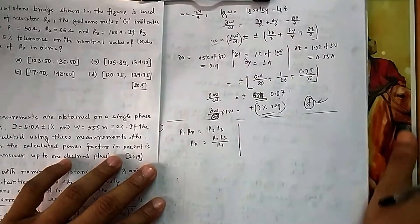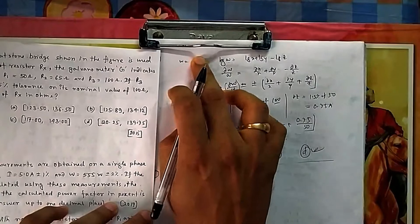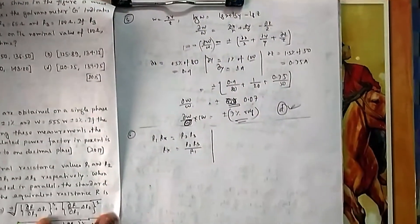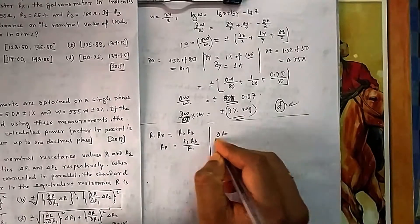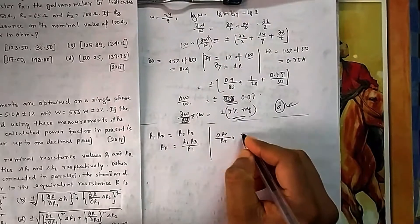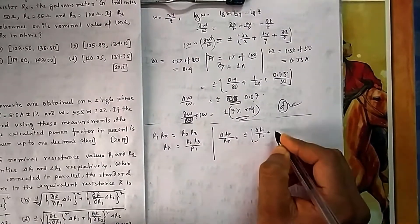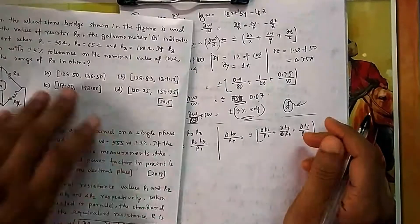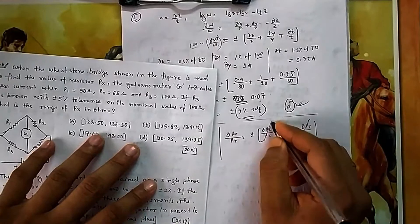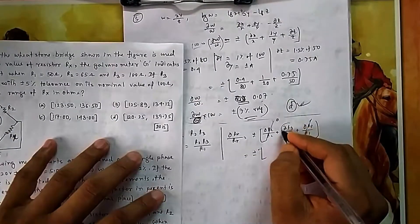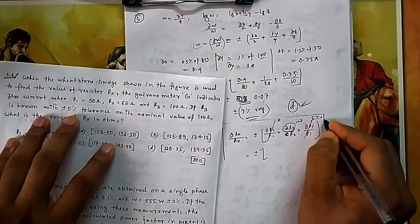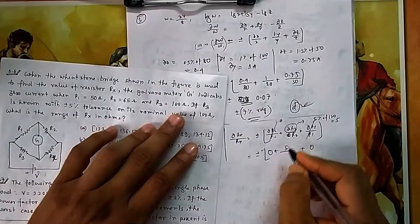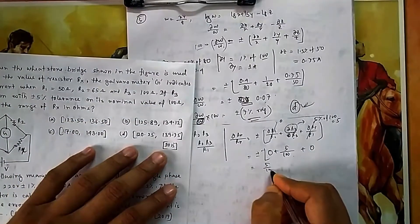For the worst case error, similar to question five, where Rx = R2·R3/R1, in the worst case everything is added. The formula is: dRx/Rx = ±(dR2/R2 + dR3/R3 + dR1/R1). Since the error is only given on R3, the R1 and R2 terms are zero. So it becomes ±dR3/R3, which is five percent of 100, meaning dR3 = 5, divided by R3 = 100.